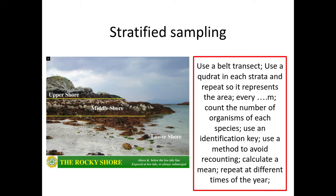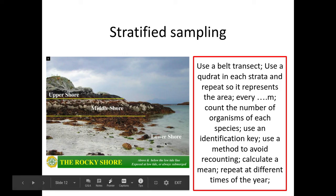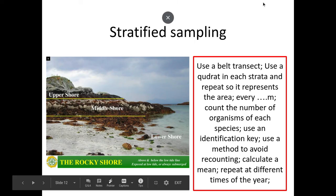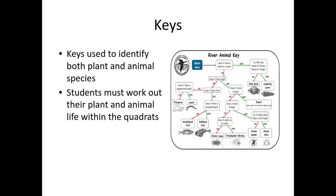Stratified sampling is where you have different strata — for example, a lower shore, middle shore, and upper shore. It's really important that you have enough representations of each repeat in each stratum. For example, if the lower shore is quite a large area, you'd have more samples for the lower shore than for the middle and upper. Again, the same things come up from the mark scheme, and it's really important we're using keys to identify the organisms we're counting so that we are accurate.